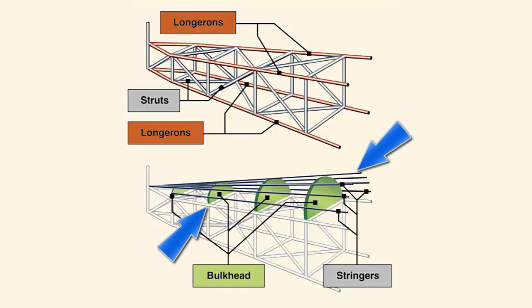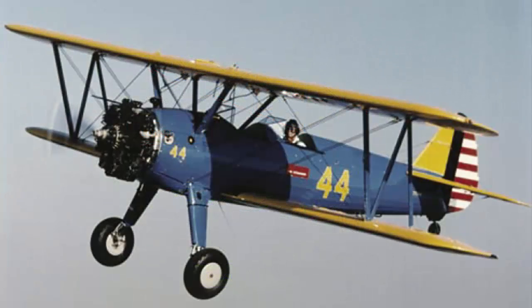Stringers and bulkheads, or formers, are added to shape the fuselage and support the covering. As technology progressed, aircraft designers began to enclose the truss members to streamline the airplane and improve its performance. This was originally accomplished with cloth fabric and then evolved to lightweight metals such as aluminum.